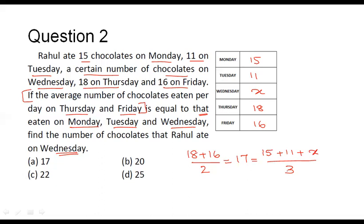So 17 equals 15 plus 11 plus X divided by 3. Solving this, we get X equal to 25. Rahul ate 25 chocolates on Wednesday. Looking at the options, option D reads 25, and that is the final answer for this question.